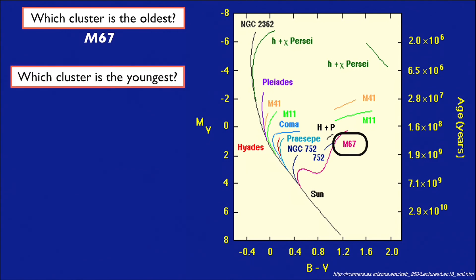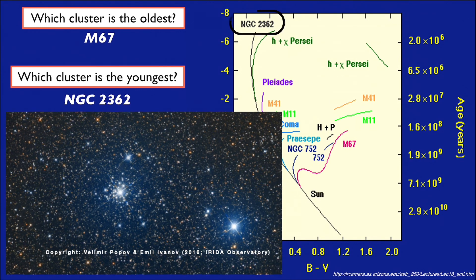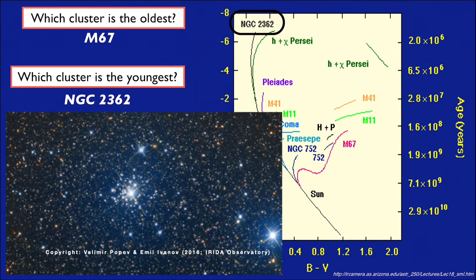Which star cluster would be the youngest? Now we need to look for the opposite, a curve with a turnoff point that's higher up on the main sequence. The cluster whose curve fits that expectation is NGC 2362.